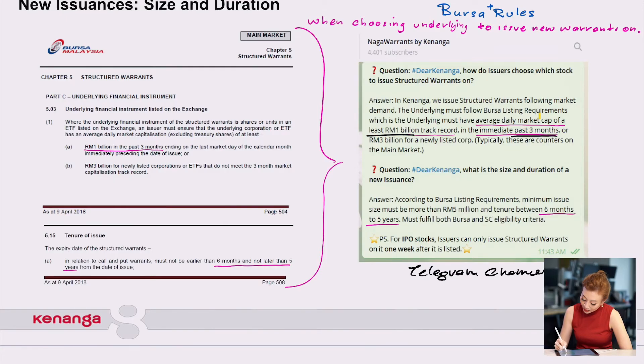And also another question that we get is, what is the size and duration of an issuance? According to Bursa's listing requirements, the minimum issue size should be more than five million, and a tenure between six months to five years.